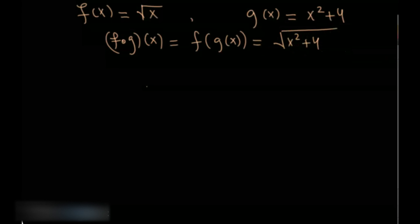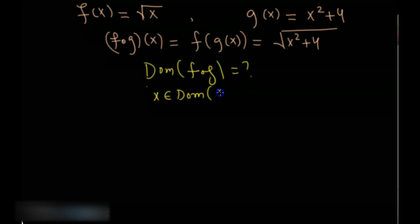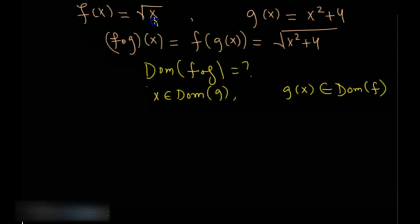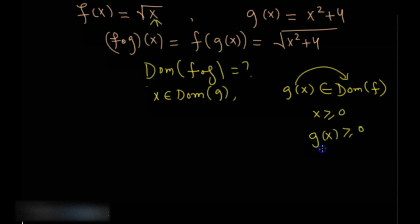Now we find the domain of f∘g. The domain consists of all x from the domain of g for which g(x) is in the domain of f. The domain of f is x ≥ 0. So we need g(x) ≥ 0, meaning x² + 4 ≥ 0.